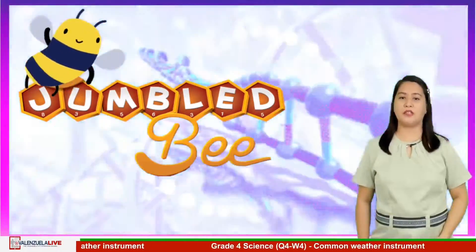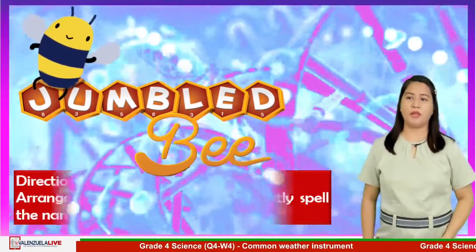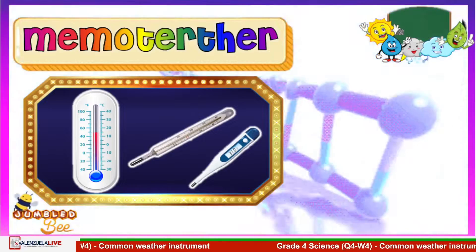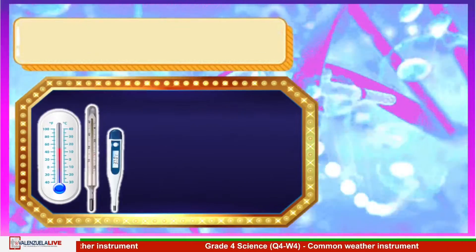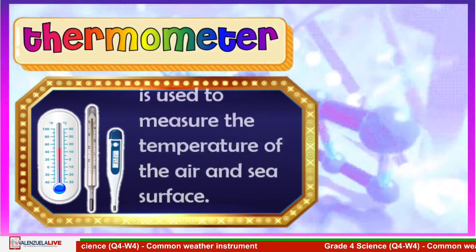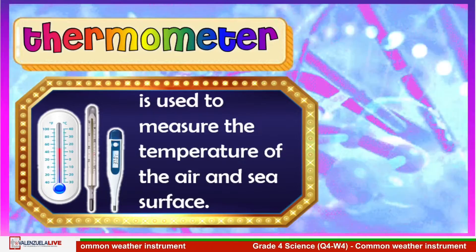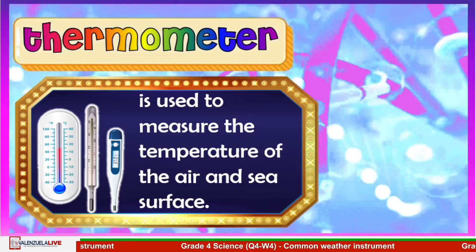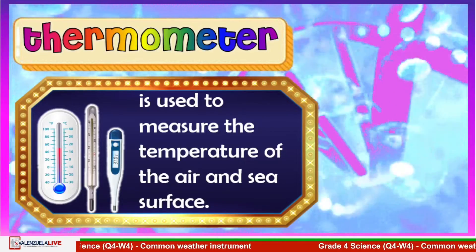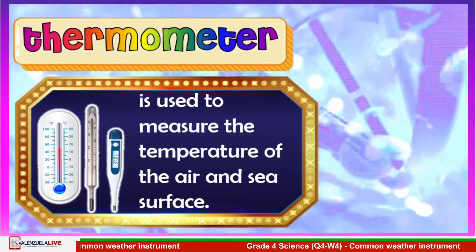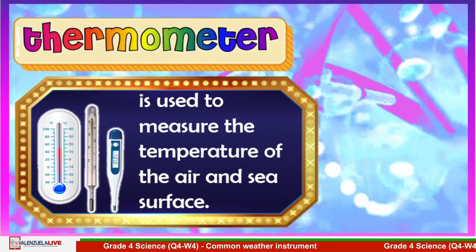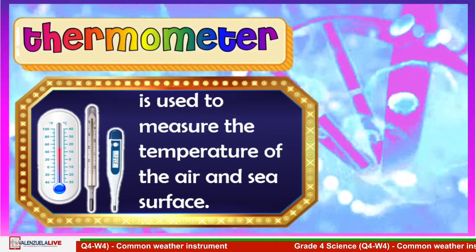You are given 5 seconds to answer. Are you ready? Let's start. Number 1: If your answer is thermometer, you are correct! A thermometer is used to measure the temperature of the air and sea surface. A room thermometer has numbers on each side — the left side shows the Celsius reading, with a highest number of 100 and lowest of 0. The number near the end of the red column tells the temperature. A thermometer may bear the Fahrenheit, Celsius scales, or both. Air temperature is read in degrees Fahrenheit and degrees Celsius.